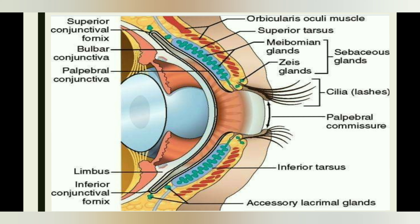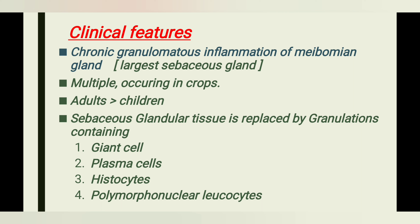There is another sebaceous gland also present, called the Zeis gland. What is chalazion? Chalazion is a chronic, non-suppurative, granulomatous inflammation of the meibomian gland — the largest sebaceous gland of the eyelid. It occurs in multiple crops and adults are more prone than children.